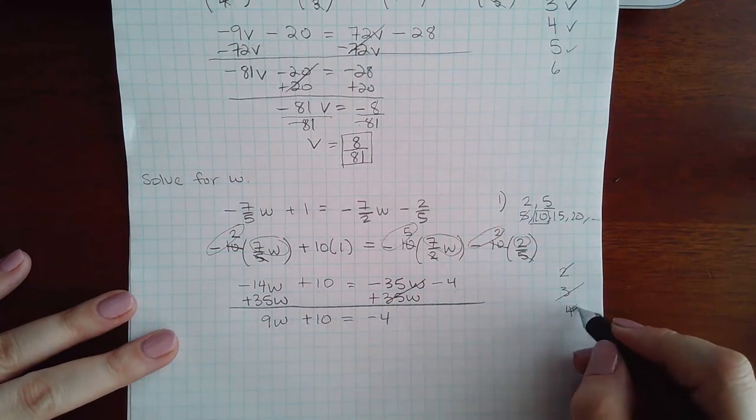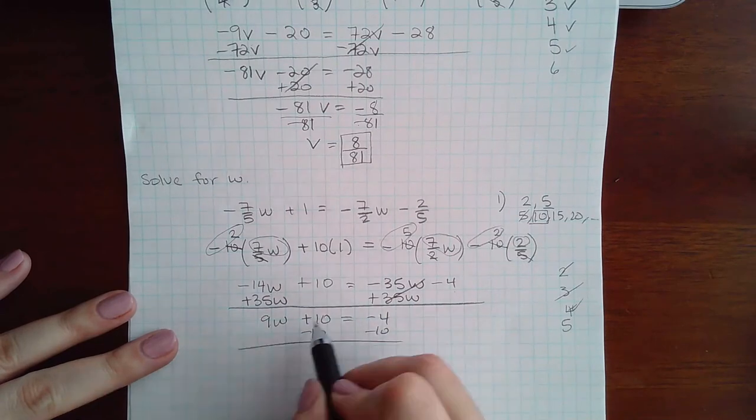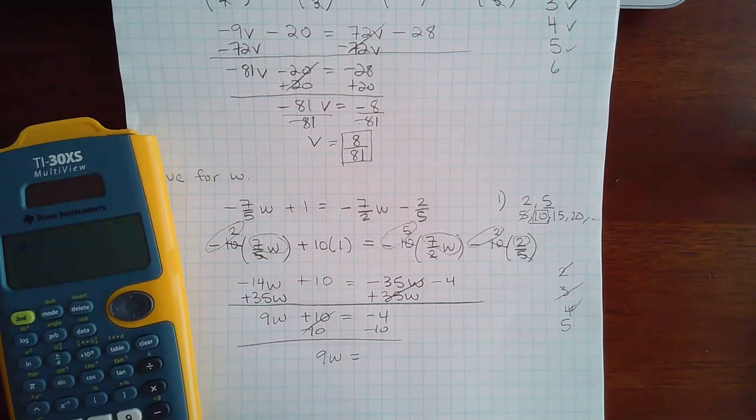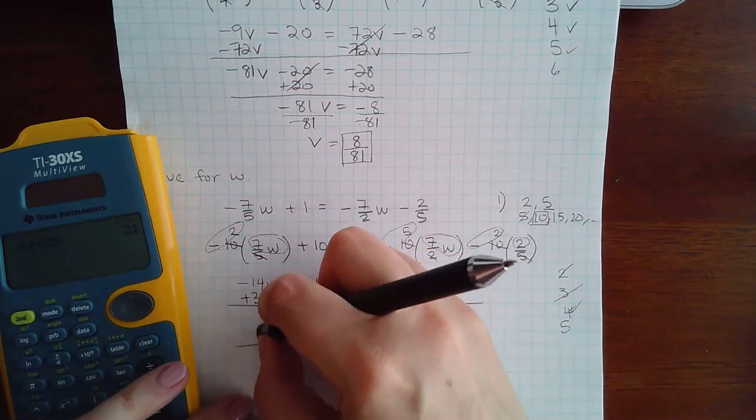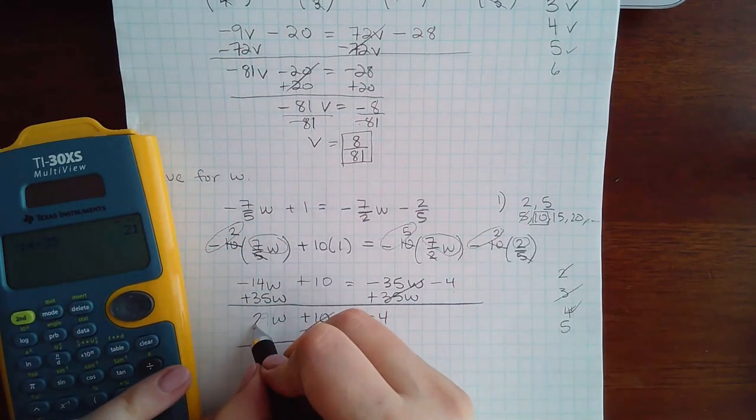Then step 5 is to move the constant to the other side. I don't think I am correct in that, so let me check that. Negative 14 plus 35 is actually 21, so I don't know what my brain was doing. It's always good to double check your arithmetic.